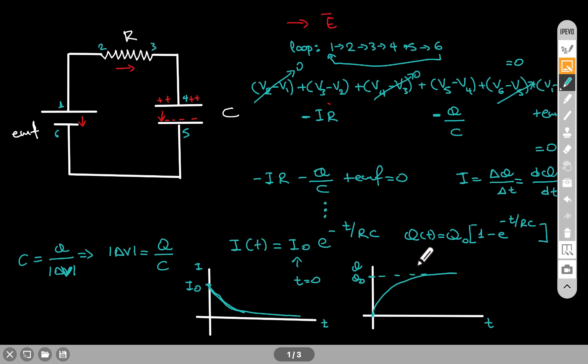If you have a problem where the problem is asking you to find the potential difference across the capacitor as a function of time, just take this and divide it with C and that will give you the potential difference across the capacitor.